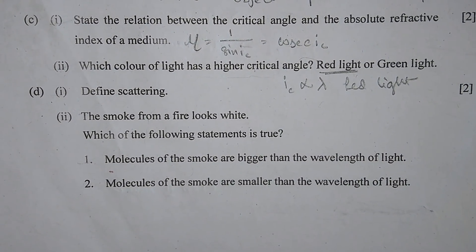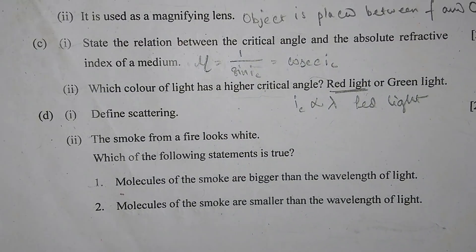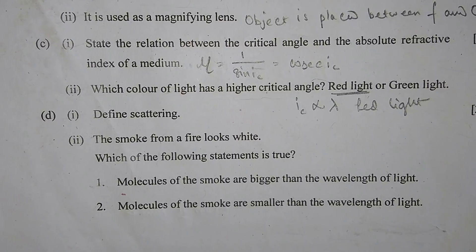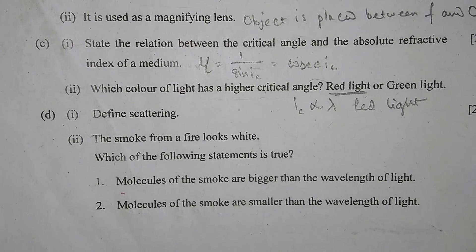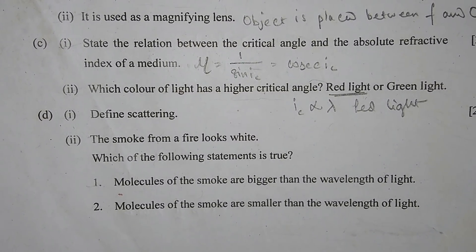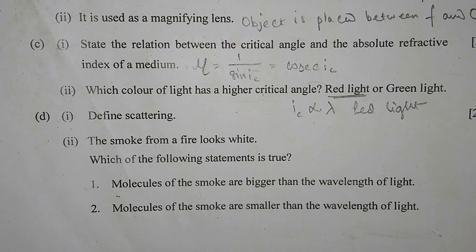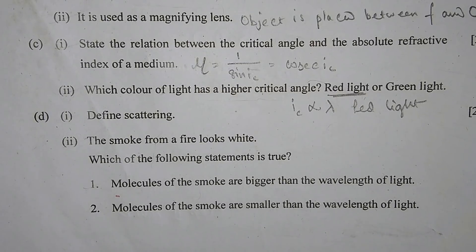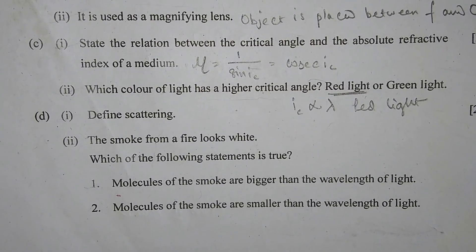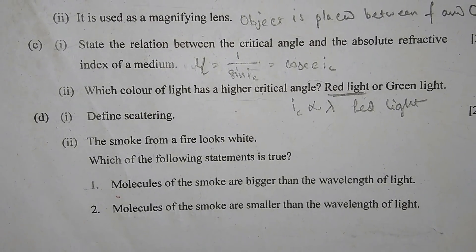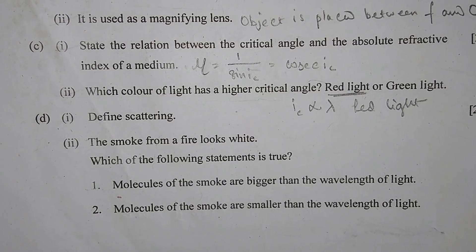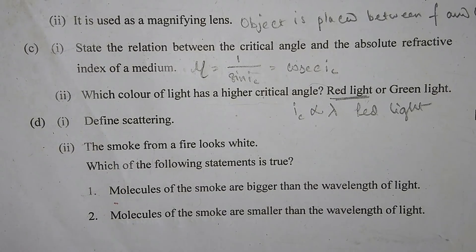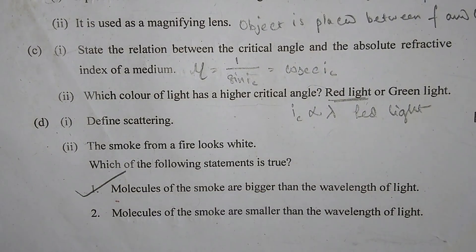Part D, number 1: Define scattering. Scattering is the process of absorption and then reemission of light energy. Part D, number 2: The smoke from a fire looks white — which statement is true? Number 1: molecules of the smoke are bigger than the wavelength of the light, or Number 2: molecules are smaller than the wavelength. Number 1 will be the correct answer.